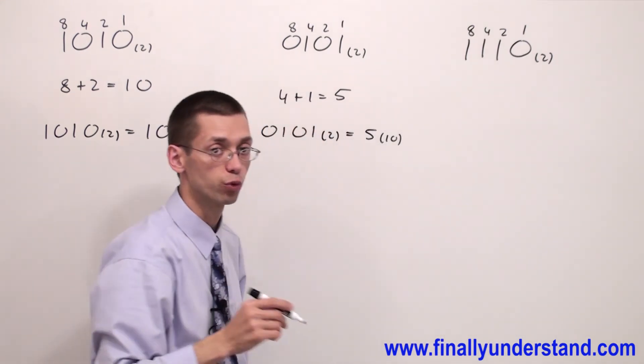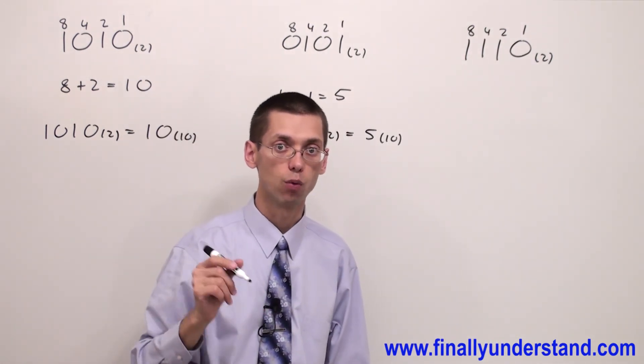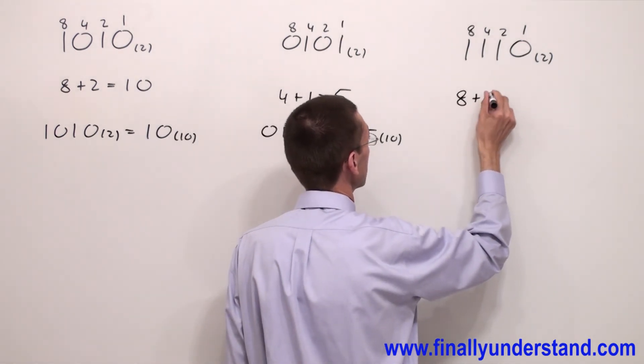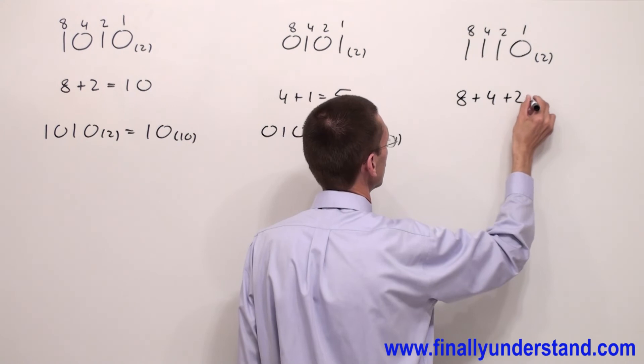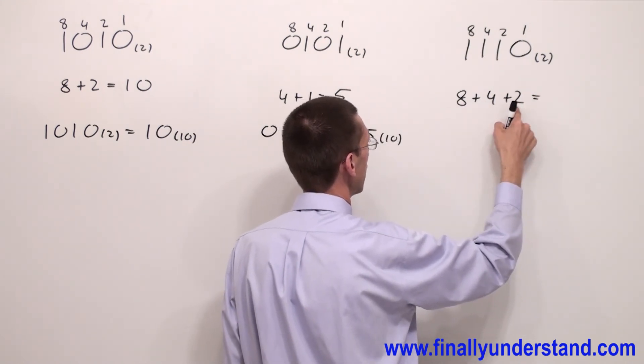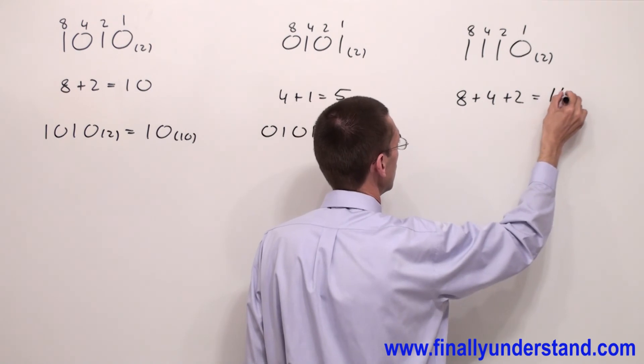Again, keep in mind we're supposed to always add the weights which are above ones. So, I have eight plus four plus two. This is equal eight plus four is 12 plus two is 14.